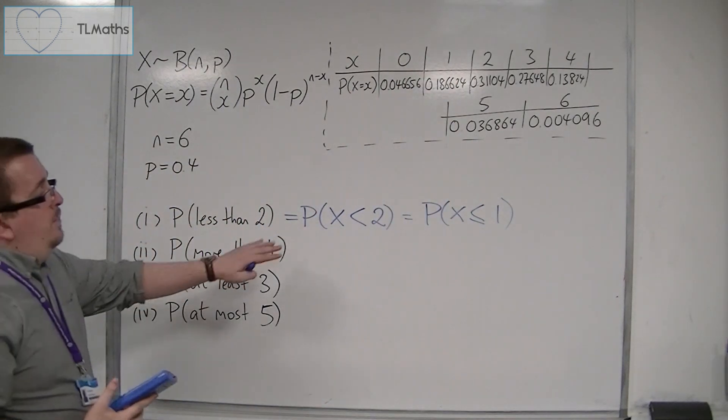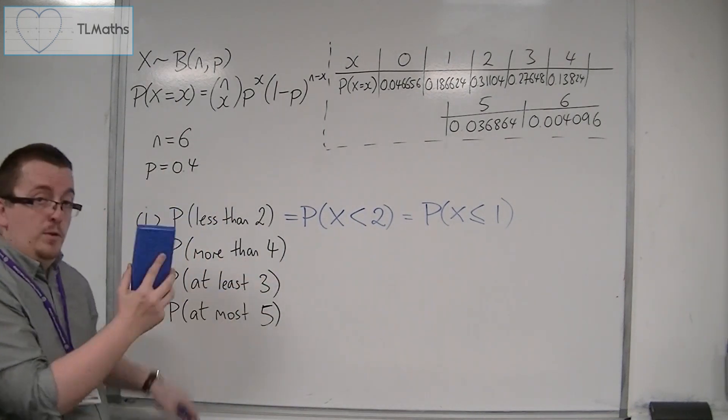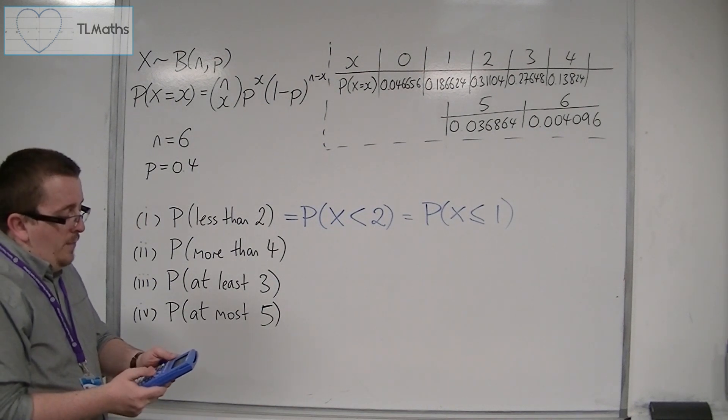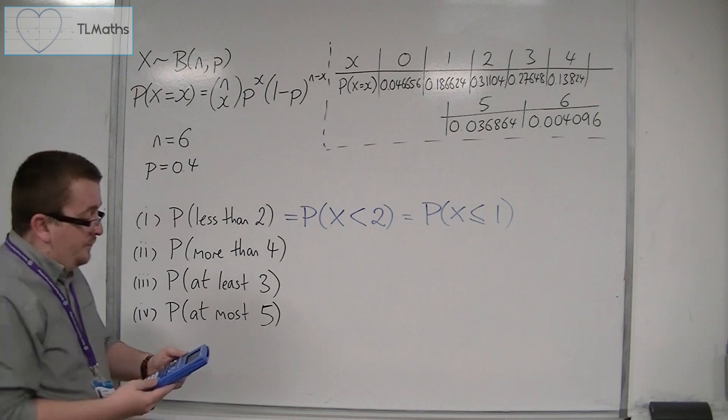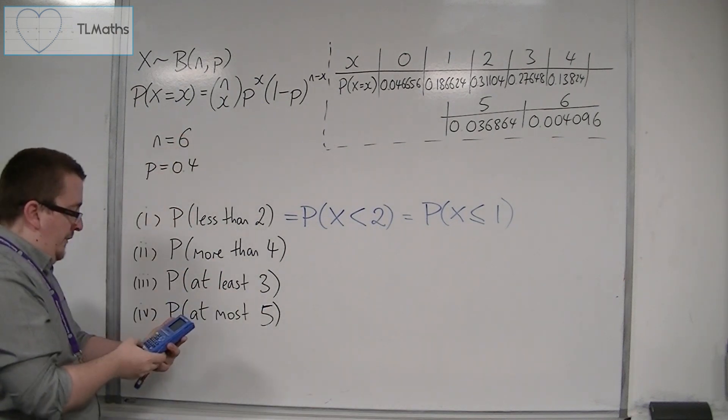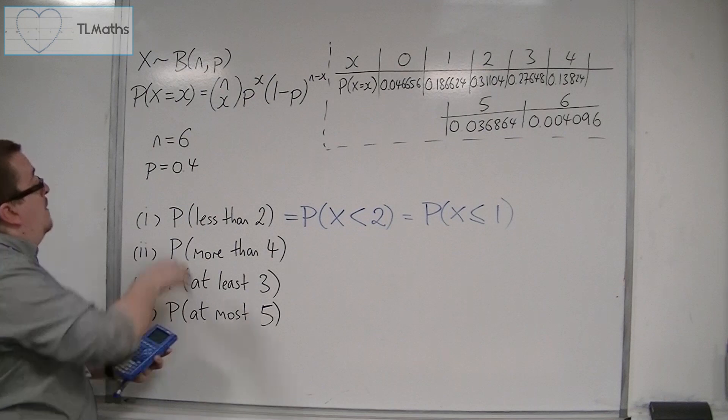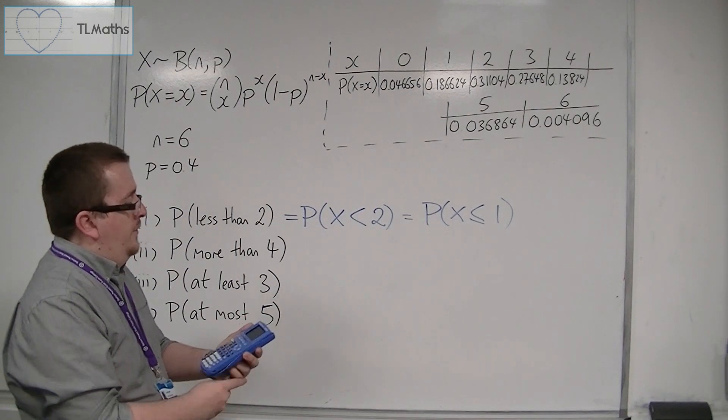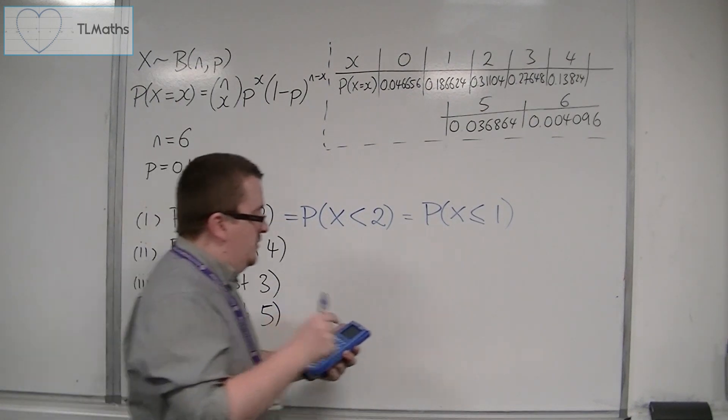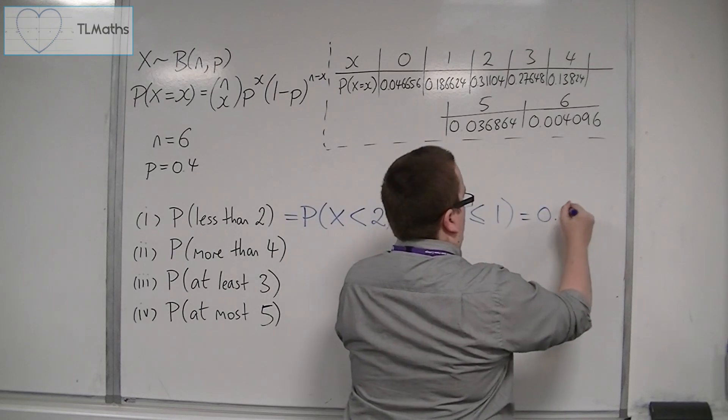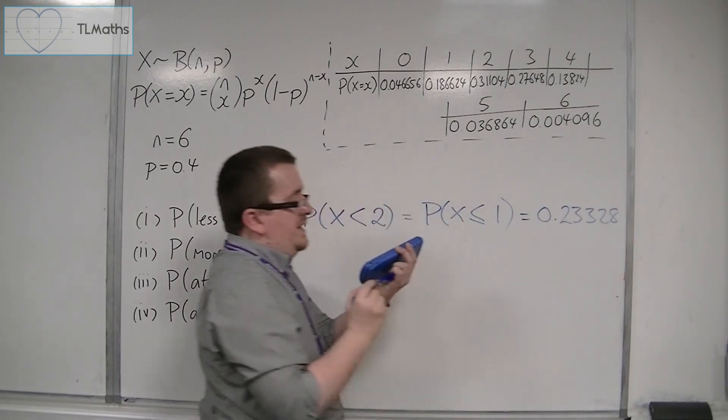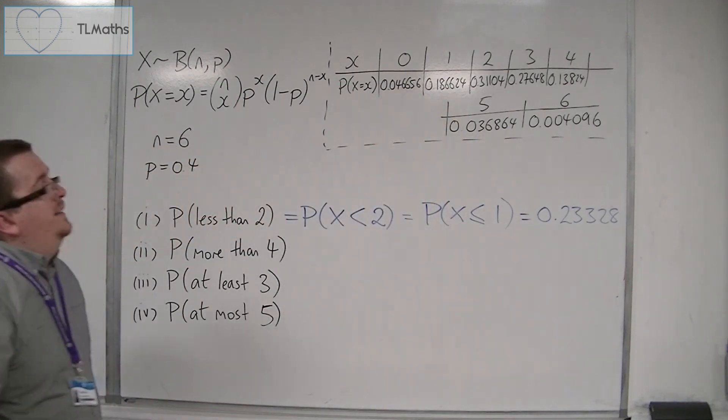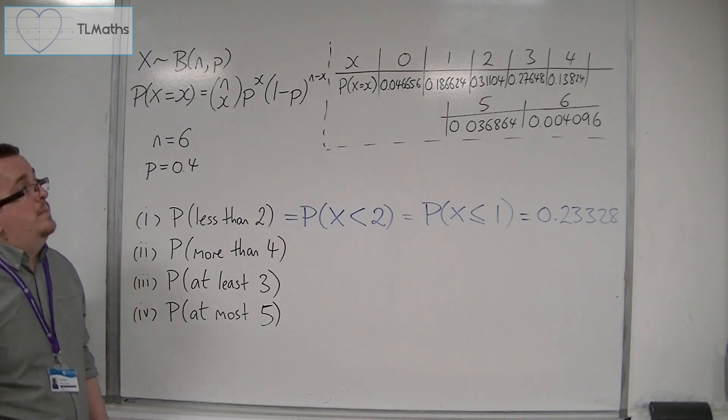So when we're plugging this into the blue calculator, the TI-82 stats, then you're wanting to go to binom CDF, then we've got our number 6, we've got our probability 0.4, and then comma 1. So that would be 0.23328. So effectively, it's the same thing as adding together 0 and 1.